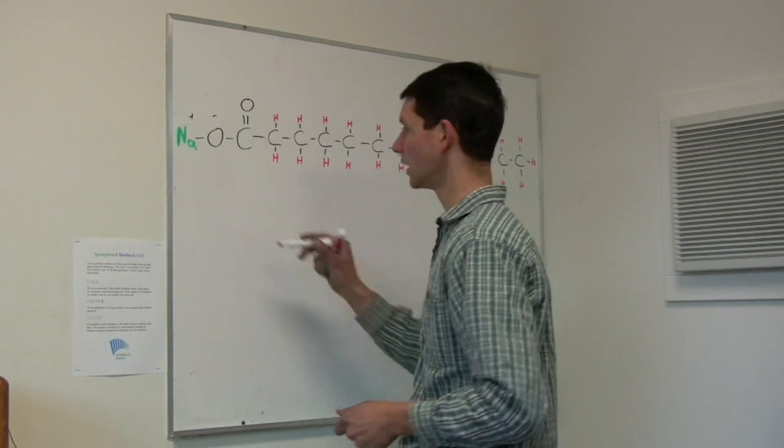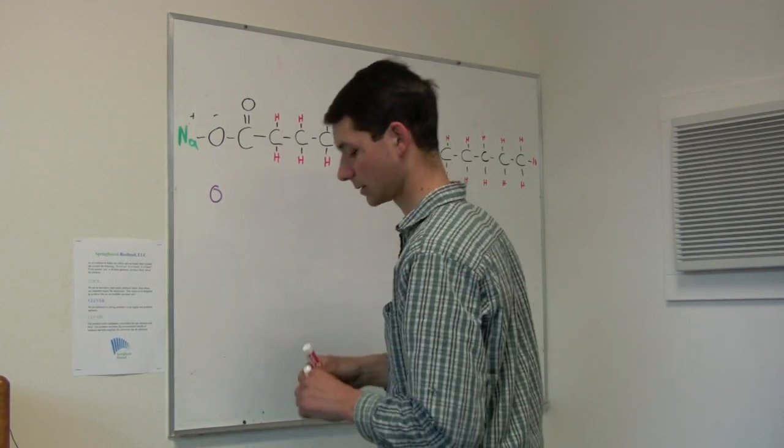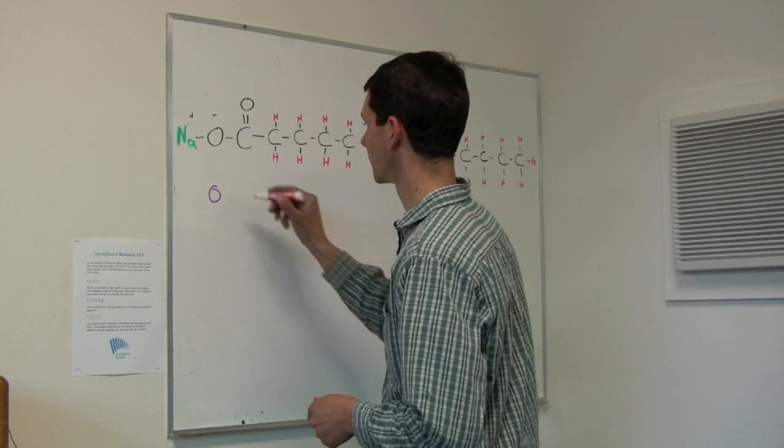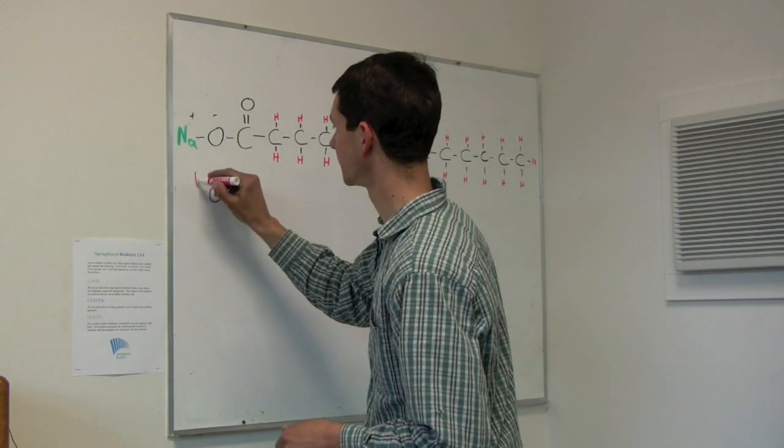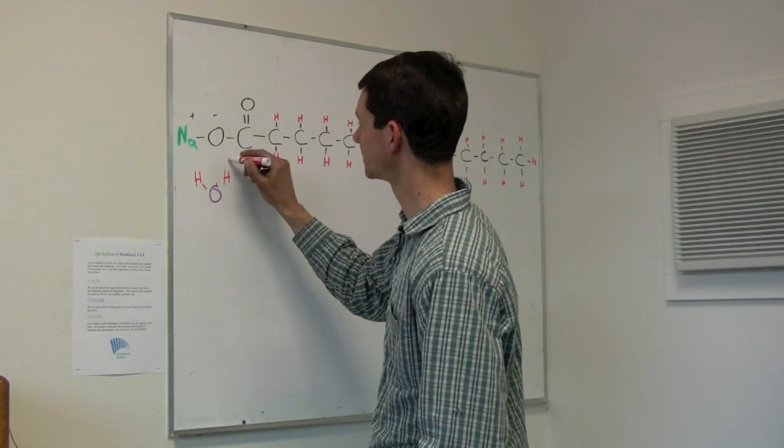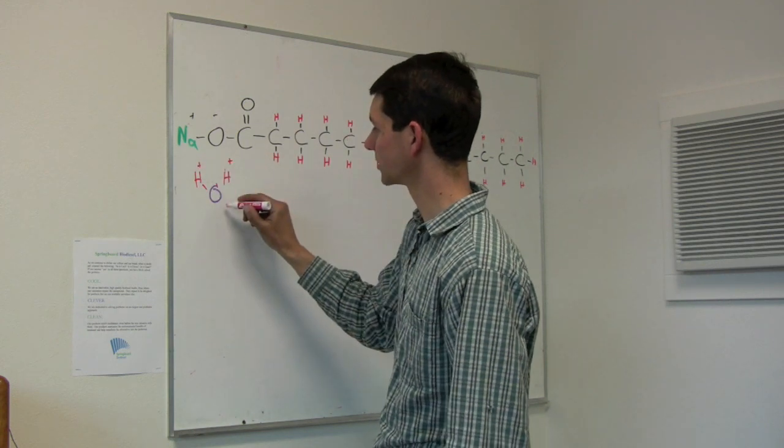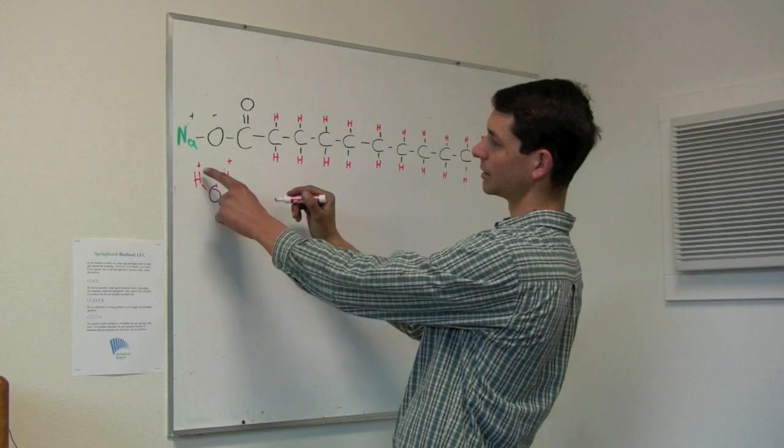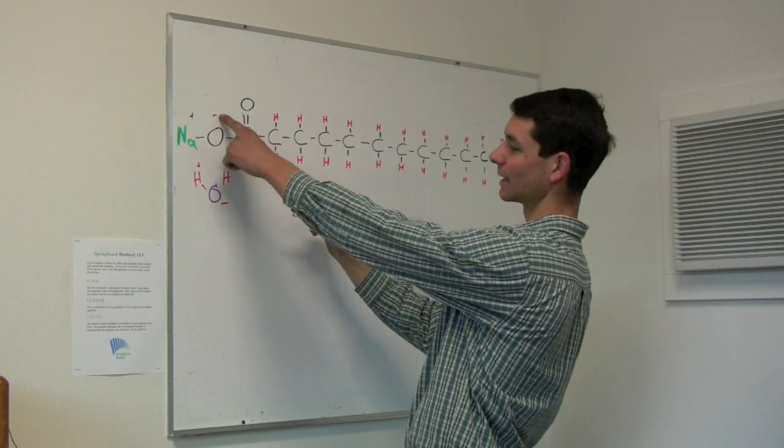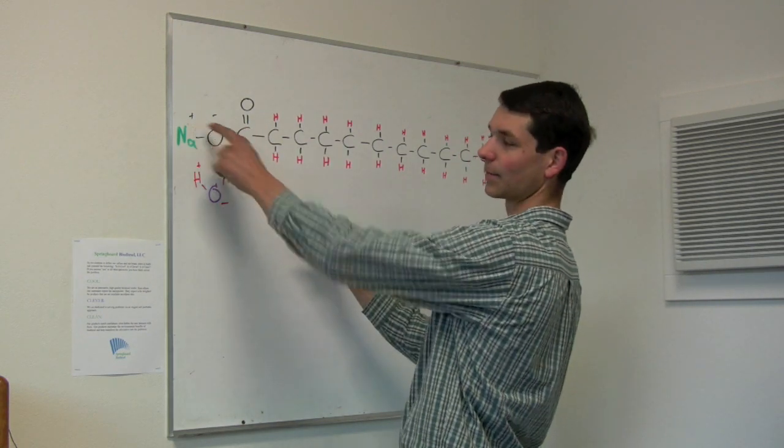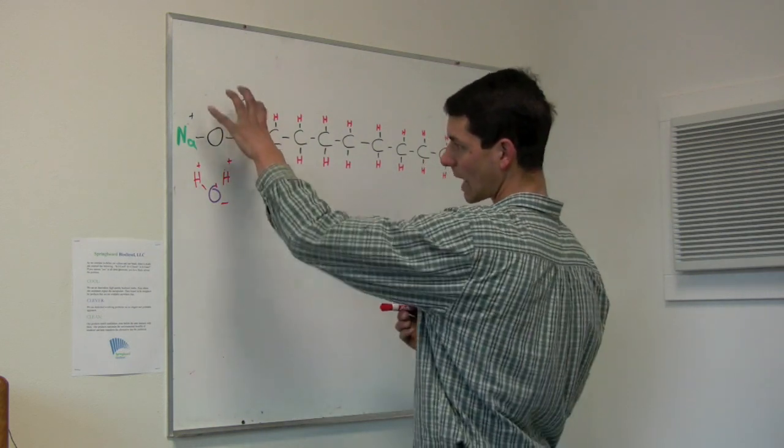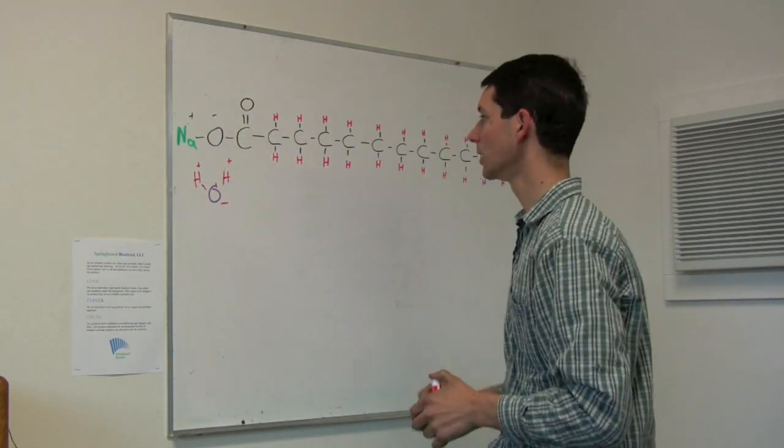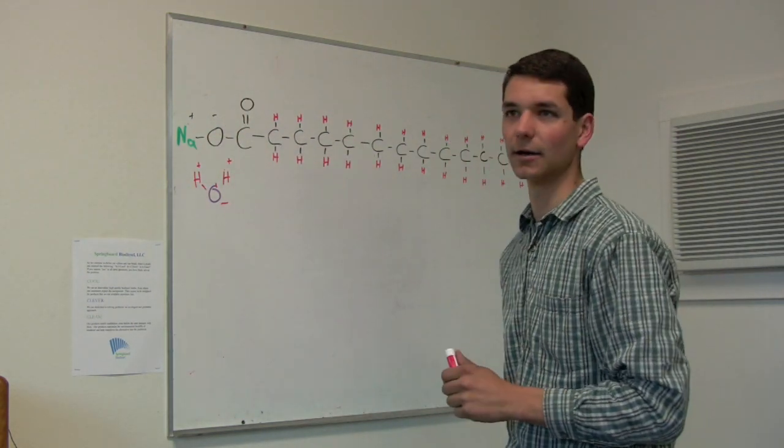It's made up of an oxygen combined with two hydrogens. Those hydrogens carry a positive charge while the oxygen carries the negative charge. The positive charge sticks to the negative charge and vice versa. These grab onto the end of the soap molecule and carry it out of the biodiesel.